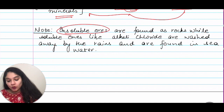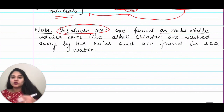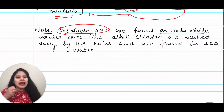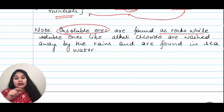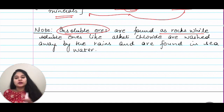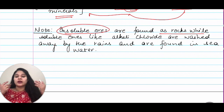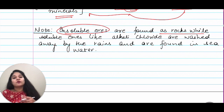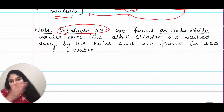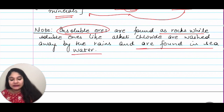Insoluble ores — those which are not soluble — are found as rocks. When we mine, we dig into the earth and get huge-sized rocks which are a mixture of silica, stones, and your metal. The soluble ones: when there is rain, the rain washes away those ores, and eventually with the river these ores mixed in water reach the sea. So for those, extraction happens through mining in seas — we dig in and collect whatever we can find there.